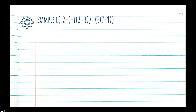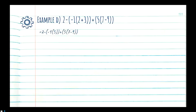We drop all of the equation around it — the '2, negative, opening bracket, negative 1' all comes down on the left, and on the right we bring the closing bracket, plus sign, and then the bracket '5(7−9)' and both closing brackets. All we changed was the inner bracket: where it said 2+3 it's now equal to 5.